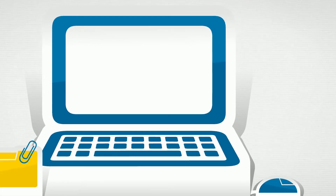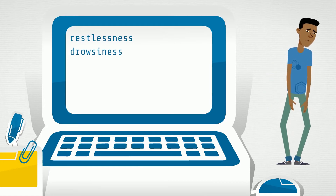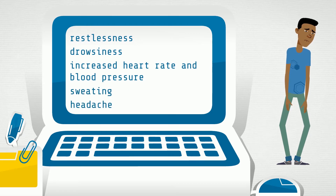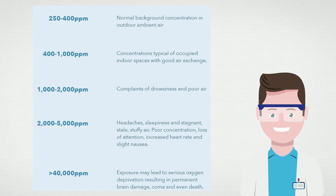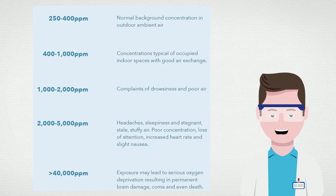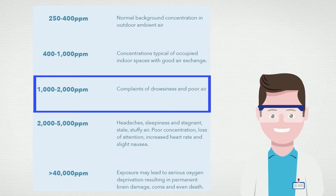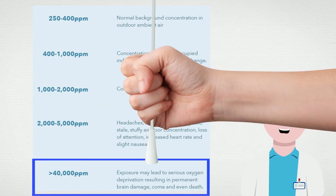What are the effects of CO2? Basically, restlessness, drowsiness, increased heart rate and blood pressure, sweating, and headache. See this graph with different concentrations and what it can cause. As you can see here, when the concentration gets above 1,000 ppm, the consequences are pretty bad to the human species. Above 40,000 ppm can lead to death.